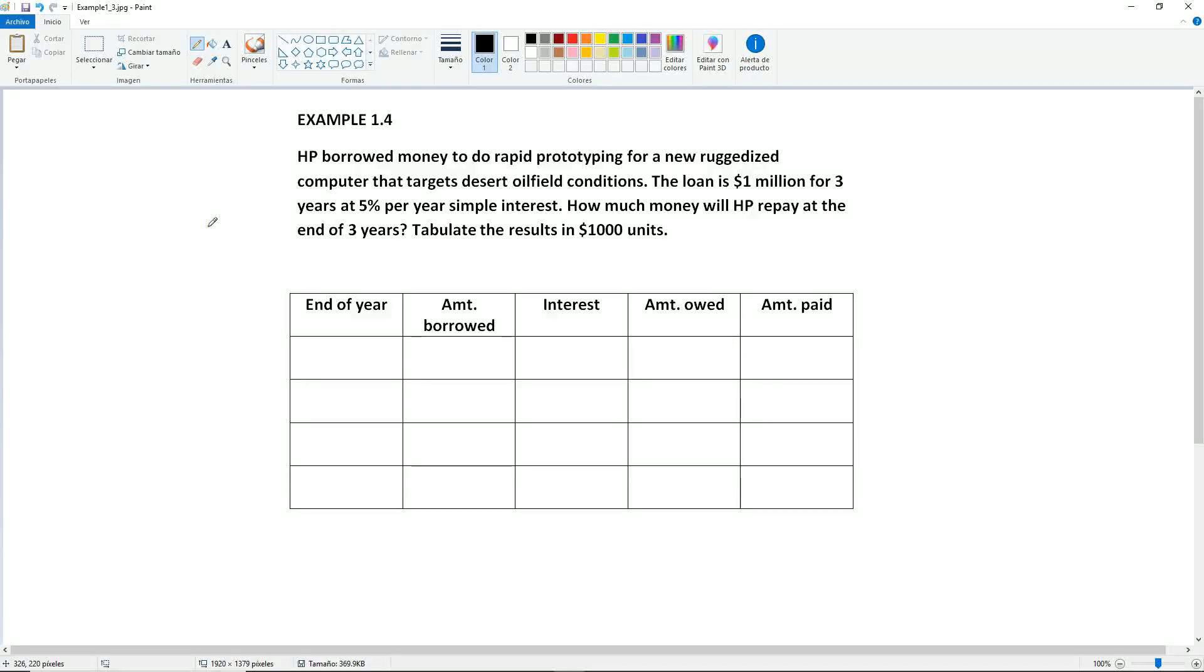Example 1.4. HP borrowed money to do rapid prototyping for a new ruggedized computer that targets desert oil field conditions. The loan is $1 million for three years at 5% per year simple interest. How much money will HP repay at the end of three years? Tabulate the results in $1,000 units.